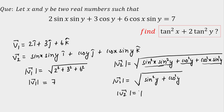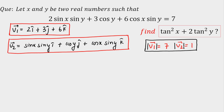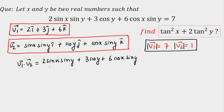Now I have |v1| = 7 and |v2| = 1. Here is something that will blow your mind: if you take v1 · v2, using î·î = ĵ·ĵ = k̂·k̂ = 1, you get 2 sin(x)sin(y) + 3 cos(y) + 6 cos(x)sin(y), which is exactly our given expression equal to 7. So v1 · v2 = |v1| × |v2| = 7 × 1 = 7, which means cos θ = 1.